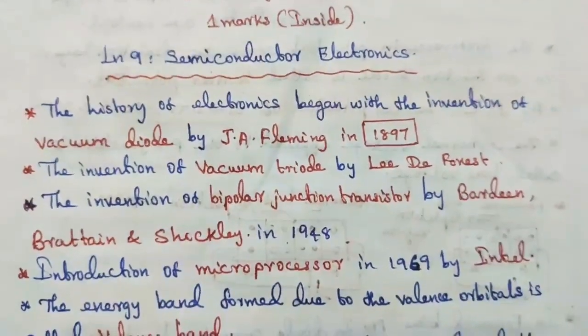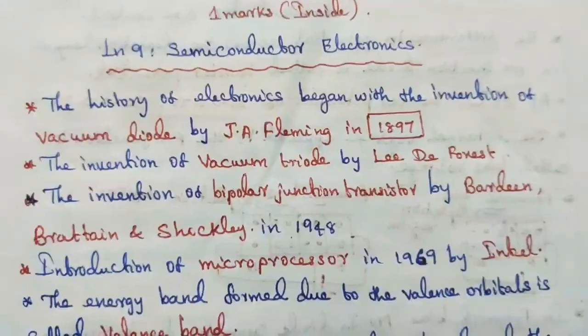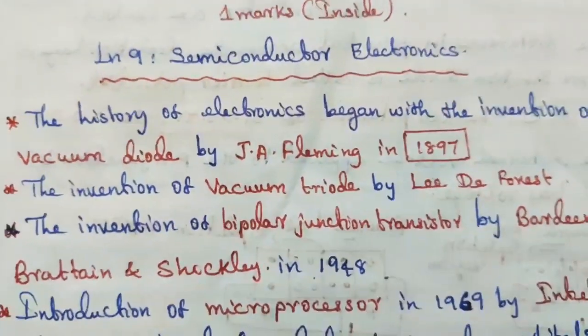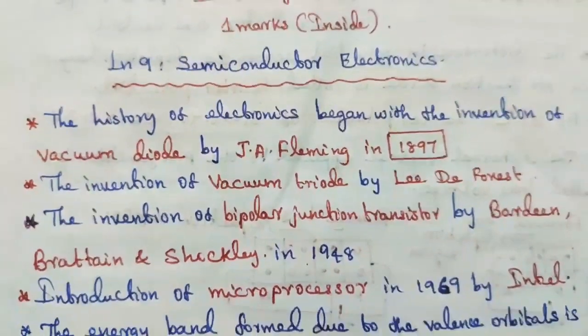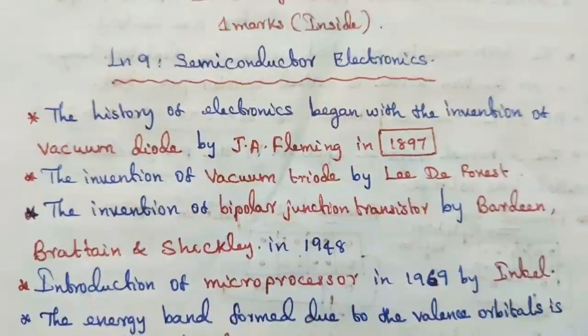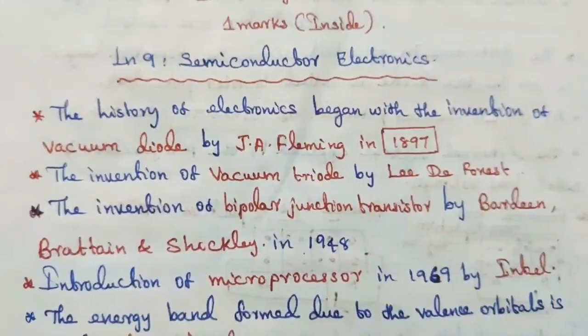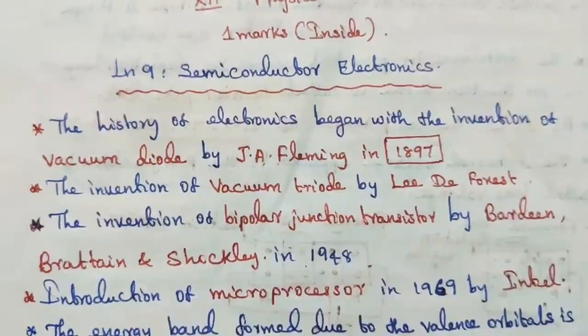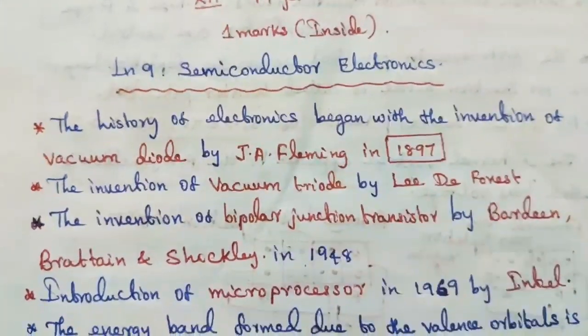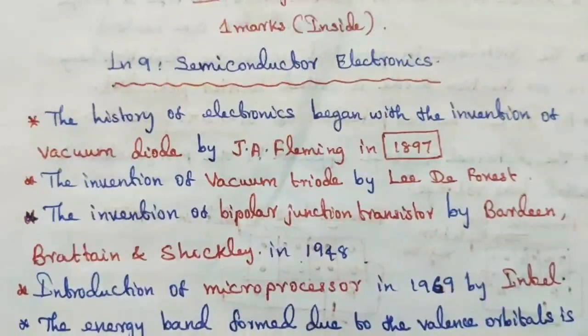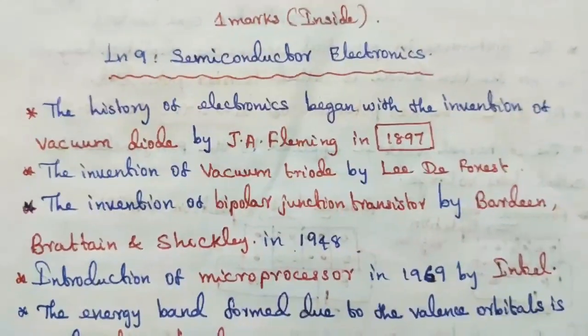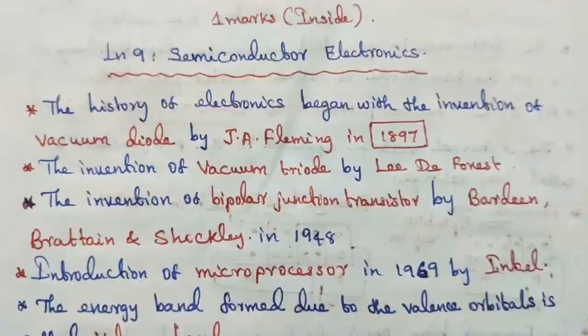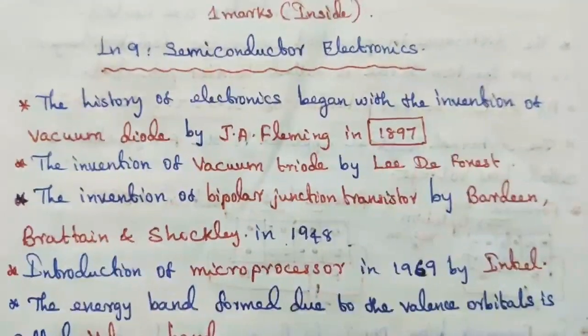The history of electronics began with the invention of vacuum diode by J.A. Fleming in 1897, the invention of vacuum triode by Lee De Forest, the invention of bipolar junction transistor by Bardeen, Brattain and Shockley in the year 1948, and the introduction of microprocessor in 1969 by Intel.